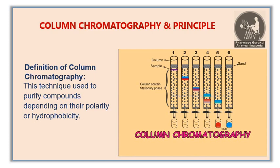There are two types of column chromatography based on operation: the first is automatic and the second is manual. In this video, the manual setup is being discussed.